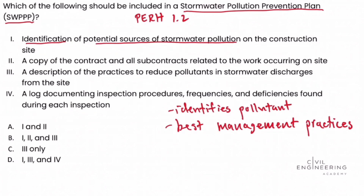Option two discusses a copy of the contract and all subcontracts related to the work occurring on site. That might be useful in other areas of construction, but this question asks specifically what should be included in the stormwater pollution prevention plan. Remaining in that scope, we eliminate answer choice two.